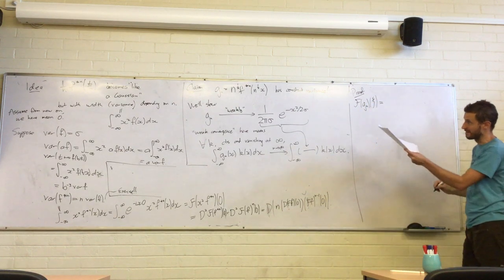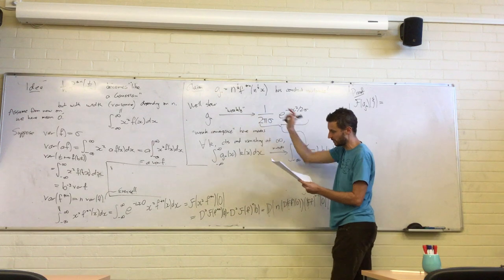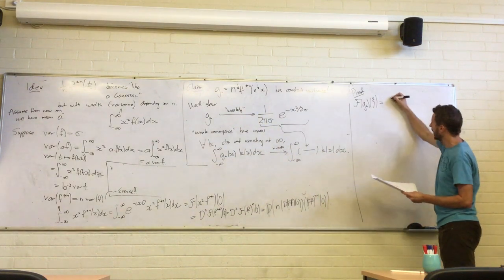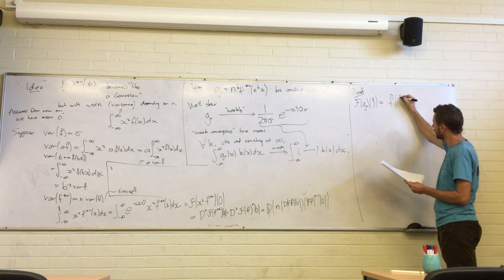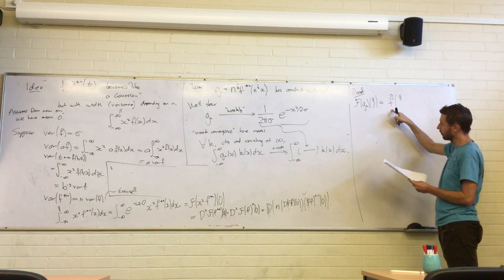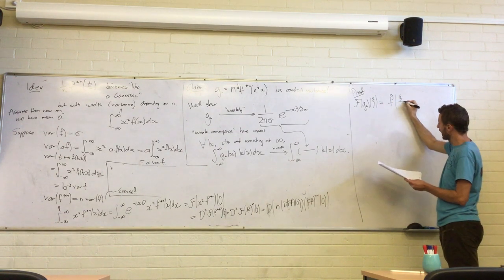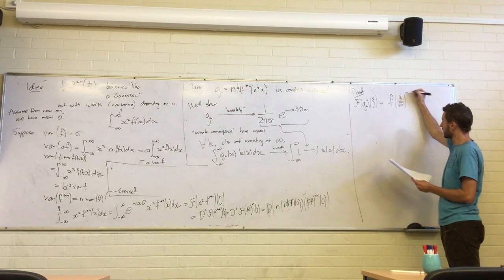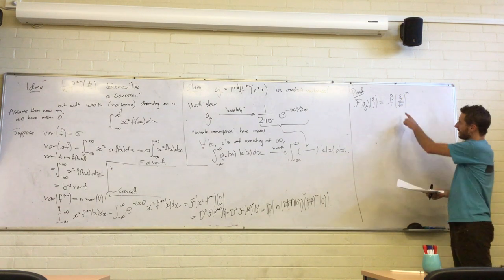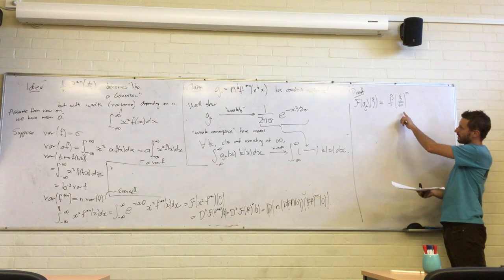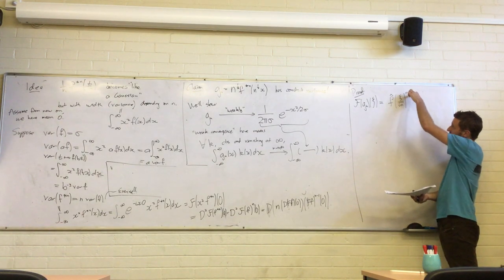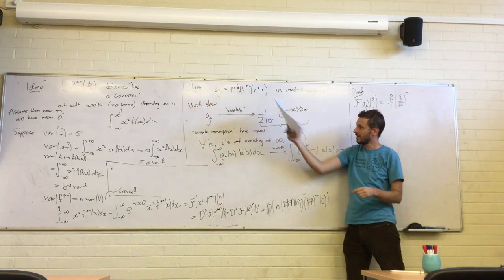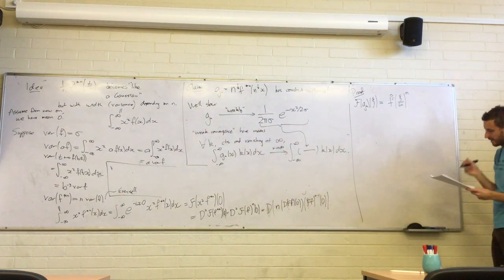This function here is easy to compute the Fourier transform of, because we know how the Fourier transform reacts with all the different operations we're doing here. The Fourier transform of gn is just the Fourier transform of one copy of f, divided by square root n, raised to the nth power.